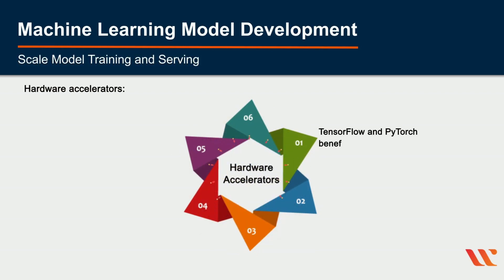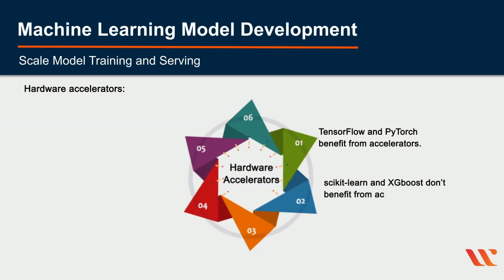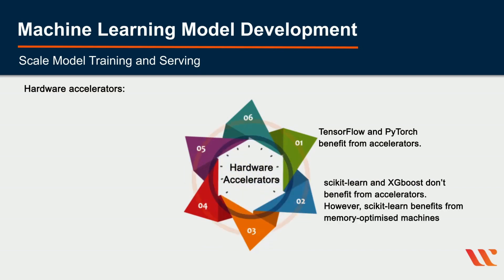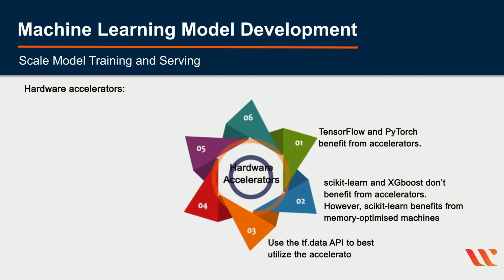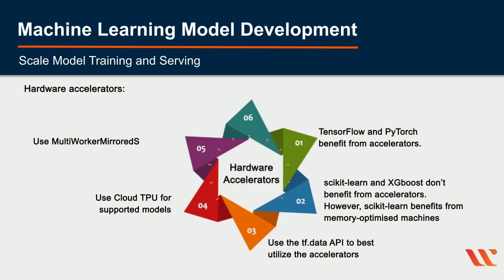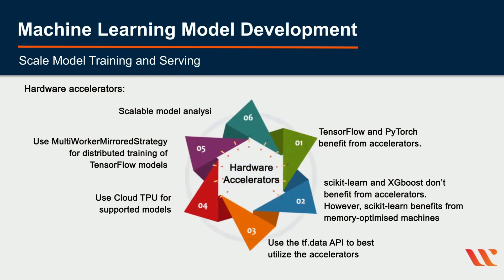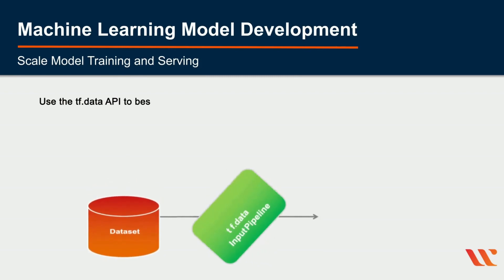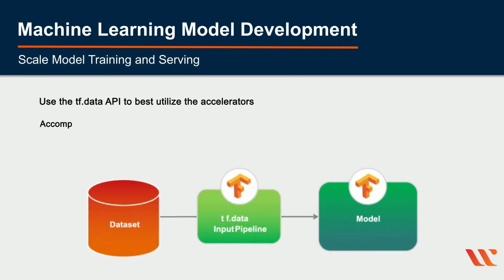TensorFlow and PyTorch benefit from hardware accelerators, while scikit-learn and XGBoost do not. However, scikit-learn benefits from memory-optimized machines. Use the tf.data API to best utilize accelerators, or use Cloud TPU for supported models. For scalable model analysis, consider cloud storage output files, Dataflow, BigQuery, and Google Data Studio.